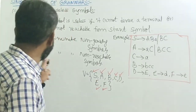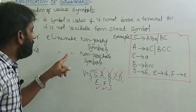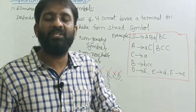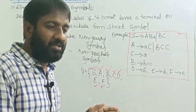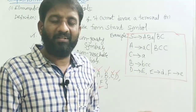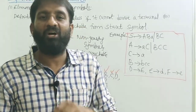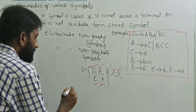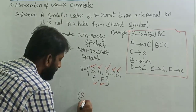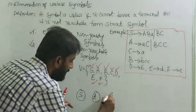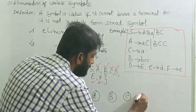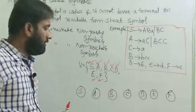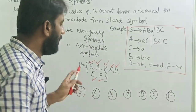The second option to identify useless variables is to identify non-reachable symbols — a symbol that is not reachable from the starting symbol, either directly or through other symbols. Write all symbols in order: S is the starting symbol, then capital A, capital B, capital C, capital D, capital E, capital F.